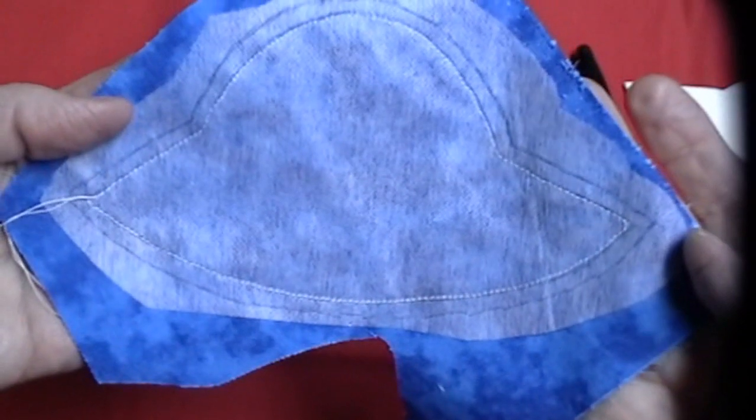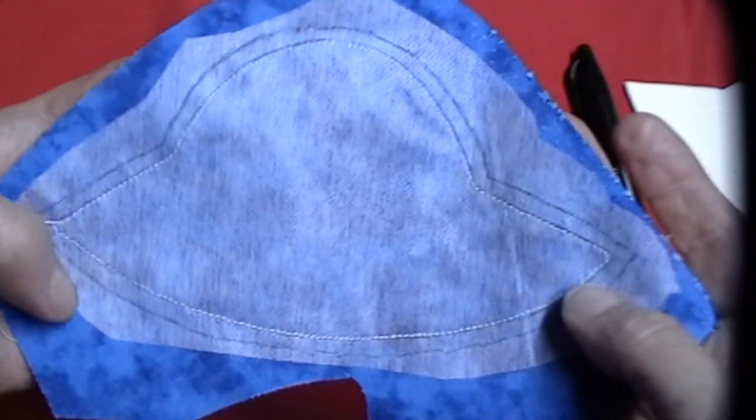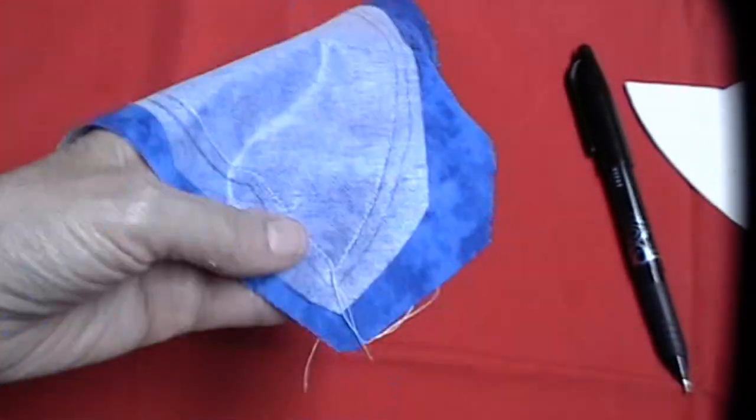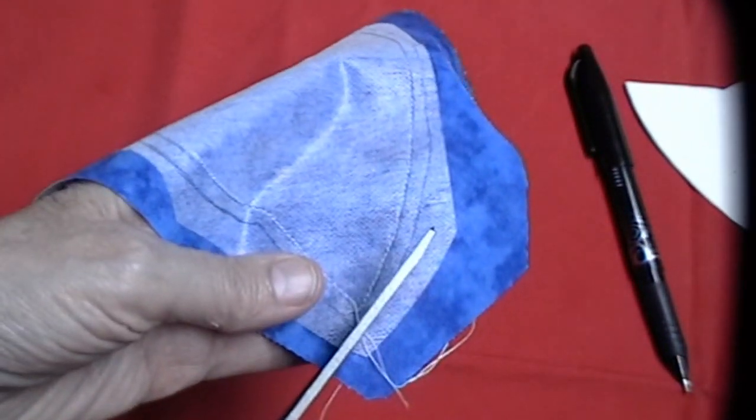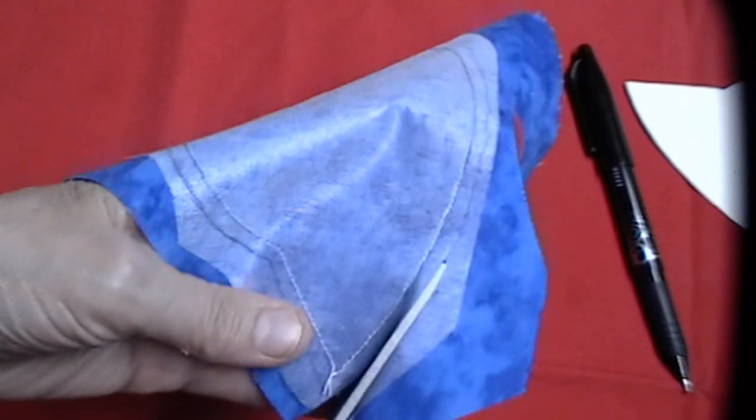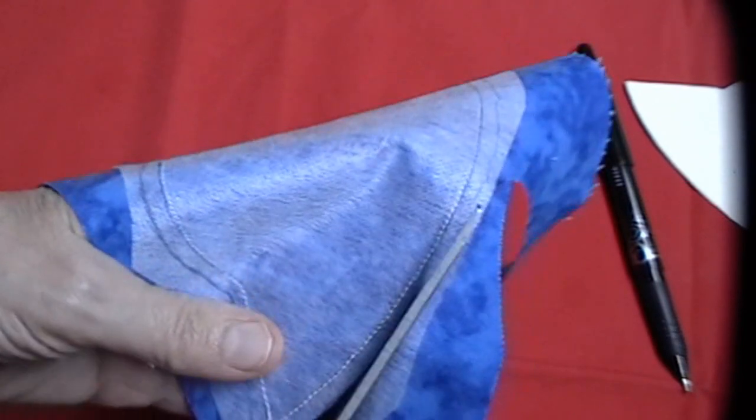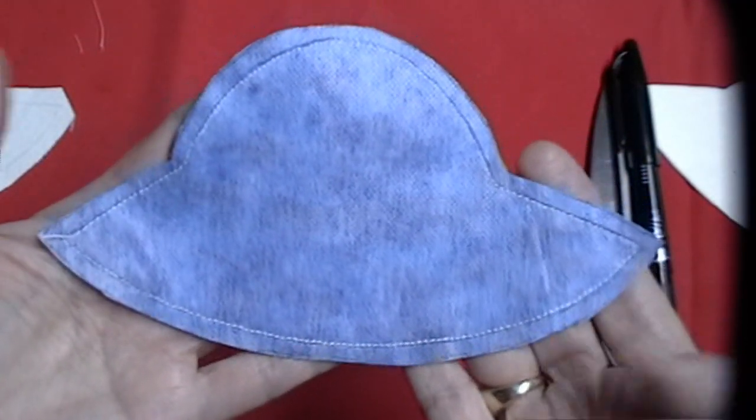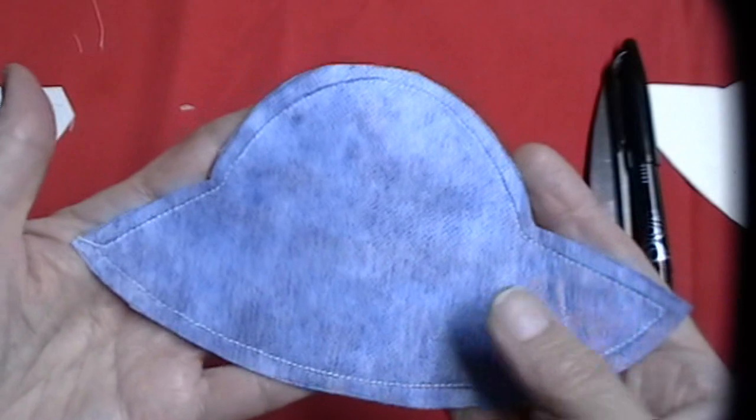Once you've sewn all the way around your hat on the inside line, we're going to trim. You need to cut on that quarter inch line that you drew on the outside and trim all the way around your hat. Now that you've trimmed all the way around on your quarter inch line, you're going to do what my mother did.